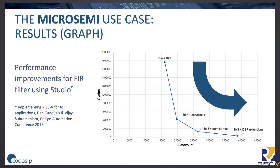Here you can see the same results displayed graphically. On the x-axis you can see the gate count number, and on the y-axis the clock cycles. The clock cycle number was significantly reduced. You can see a small increase in gate count, but as mentioned, performance was the main criterion in this case.